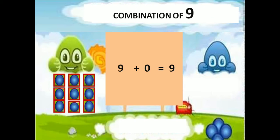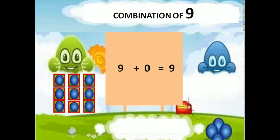First, green doll having 9 balls, blue doll having 0 balls — 9 plus 0 equals 9. Then, green doll having 8 balls, blue doll having 1 ball — 8 plus 1 equals 9.